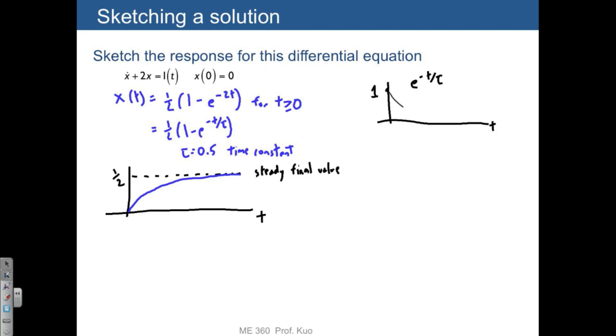In this case, this has a different sign, and so it's going to have a shape like this. What I should point out is a couple things. One is that after one time constant, in other words, when t is equal to tau...